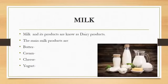So, what is milk? Milk is an opaque liquid that is derived from mammals. Here we will talk about cow's milk. There are so many products that are made from milk. Those products that are made from milk, we call dairy products. And those products are: butter, cream, cheese, and yogurt.